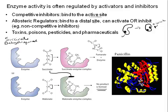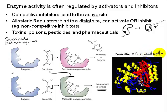Sometimes inhibitors bind irreversibly to the enzyme and permanently disrupt its ability to catalyze a reaction — referred to as suicide inhibition. The antibiotic penicillin works this way: it becomes covalently bonded to the active site of a bacterial enzyme critical for cell wall synthesis, permanently blocking substrate entry. Since the bacteria can no longer build cell walls, they can no longer reproduce and bacterial growth is effectively inhibited. Many toxins, poisons, and clinical drugs exert their effects by activating or inhibiting specific enzymes.